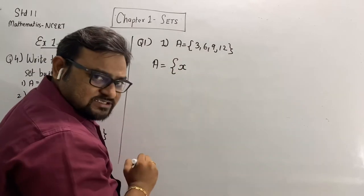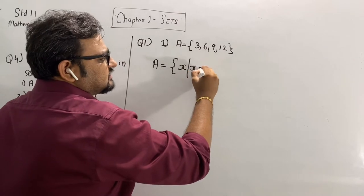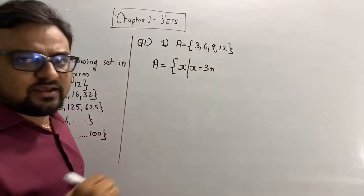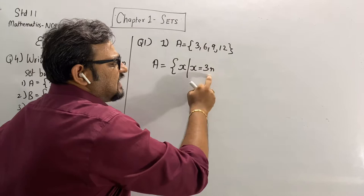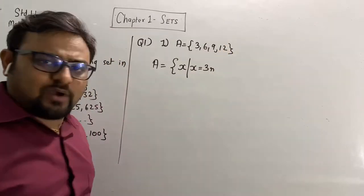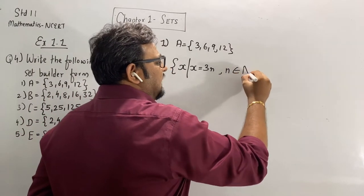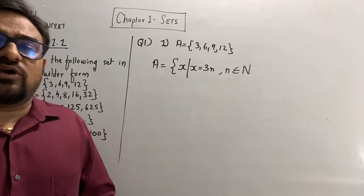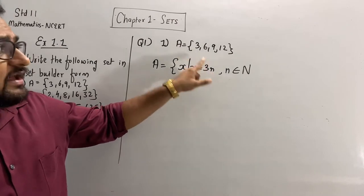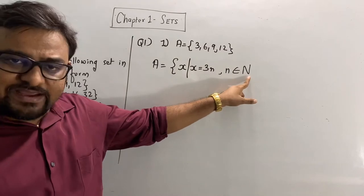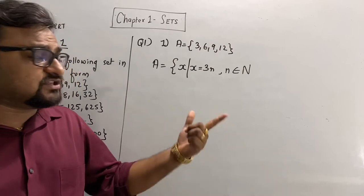So I can write it down in property method as: A = {x such that x = 3n}. When n=1, the value is 3; n=2 gives 6; n=3 gives 9; n=4 gives 12. First thing, n belongs to natural numbers N, because I cannot take n = 1.5 — if I take n=1.5, then 3 × 1.5 = 4.5, which is not in our set. And also, three fives are fifteen, which is not there.